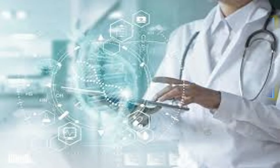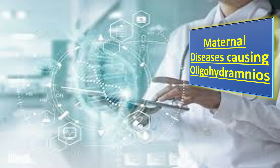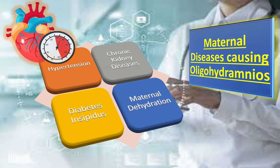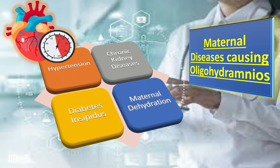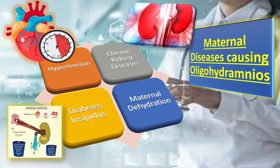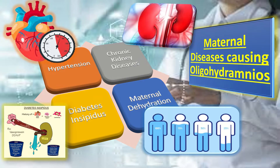The maternal diseases which cause oligohydramnios include four main conditions. First is hypertension, meaning increased blood pressure. Second is chronic kidney disease of the mother. Third is diabetes insipidus. Fourth is maternal dehydration.